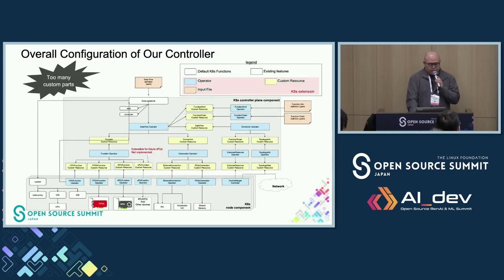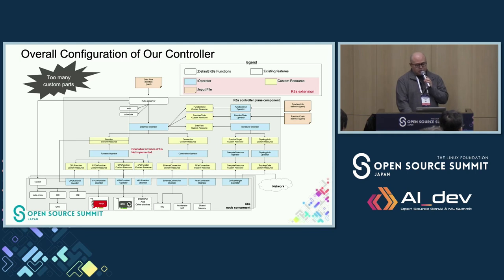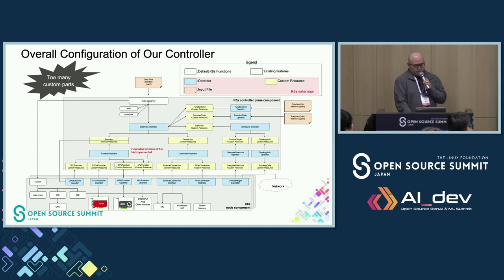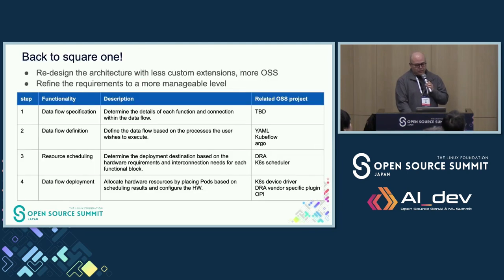Here is the overall configuration of our controller for accelerator chaining. The yellow boxes are the Kubernetes custom resources explained previously, and the blue boxes are the operators that handle the associated Kubernetes custom resources. As you can see, there are too many custom parts, so we thought we should redesign the architecture with fewer custom parts and use more OSS.